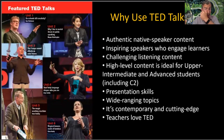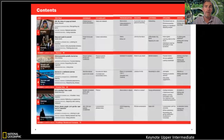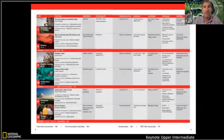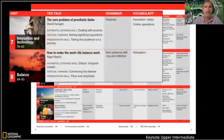Let's now have a look at a unit. We'll look at a unit from the upper intermediate B2 level, and we see straight away from the contents that it really is an integrated skills and systems program. There are 12 units for every level. Each unit has a TED Talk, grammar, and vocabulary.